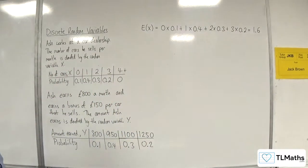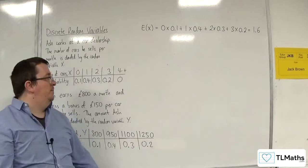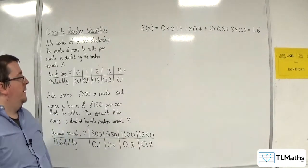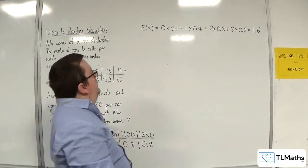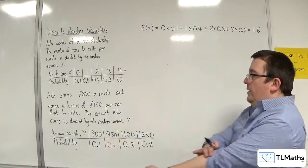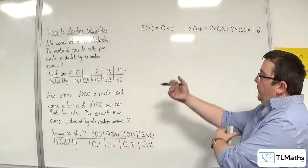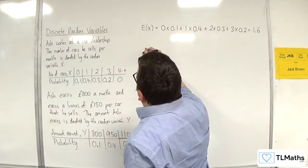OK. So, that's the maximum that he's going to earn because he's not going to sell any more than three cars. Right. OK. So, now what I want to do is calculate E of Y.